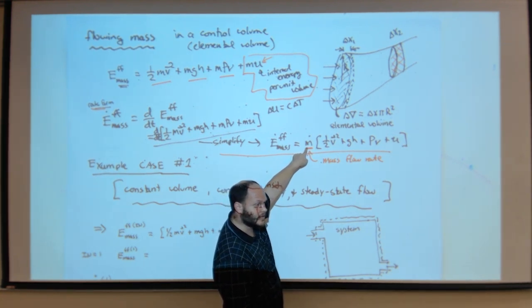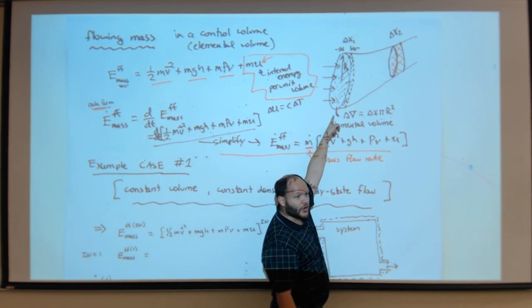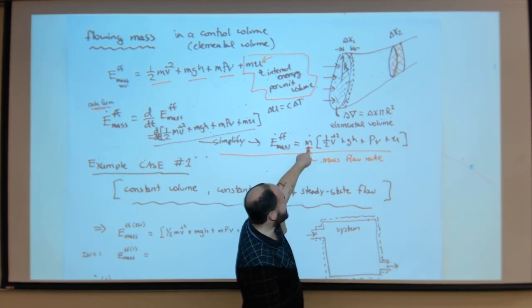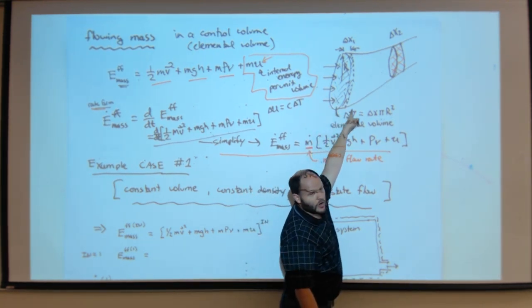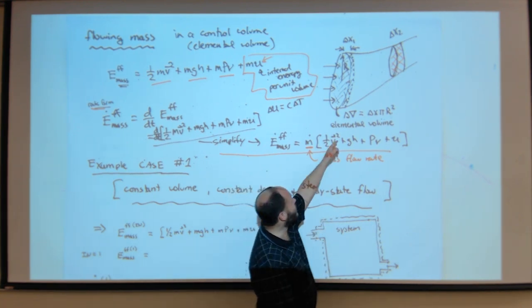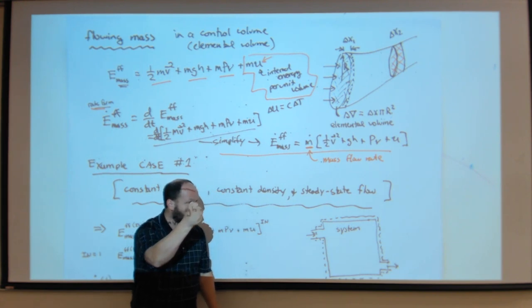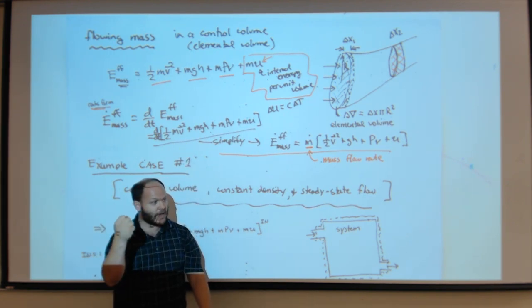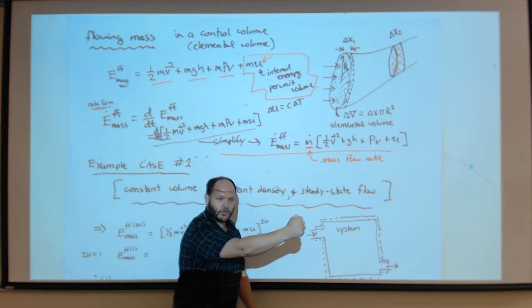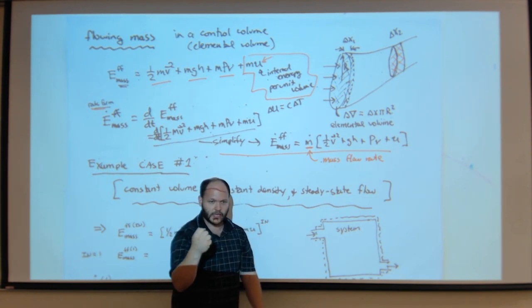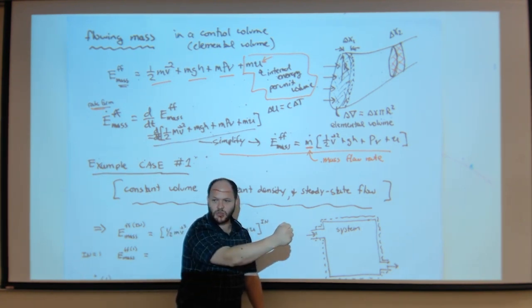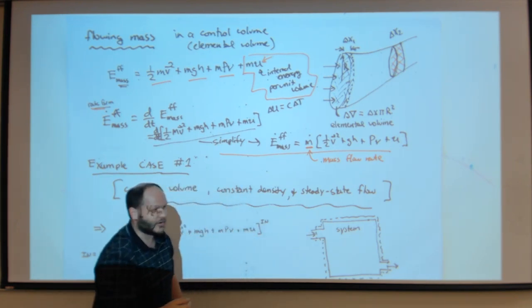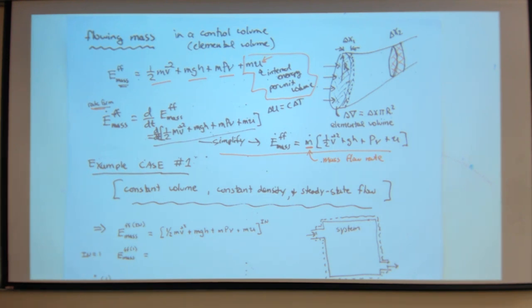My elemental volume isn't changing in most contexts, so M-dot represents the amount of mass going in and out of my elemental volume. For example, if I draw a plane as a point of reference and my hand crosses it — say my hand weighs 100 grams and it crosses in one second, that's 100 grams per second. If it crosses in a nanosecond, the mass flow rate would be 100 grams per nanosecond.